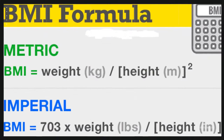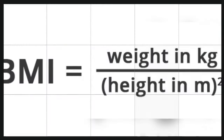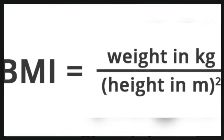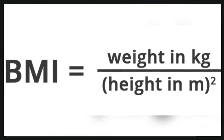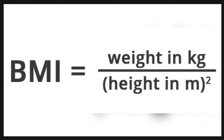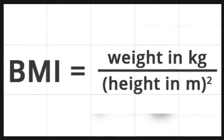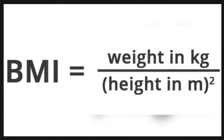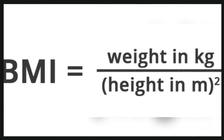BMI formula — how is it calculated? BMI is calculated by dividing the weight by the height squared, then adjusting for imperial measurements if necessary. A person's BMI index is calculated by dividing their weight in kg by their height in meters squared.